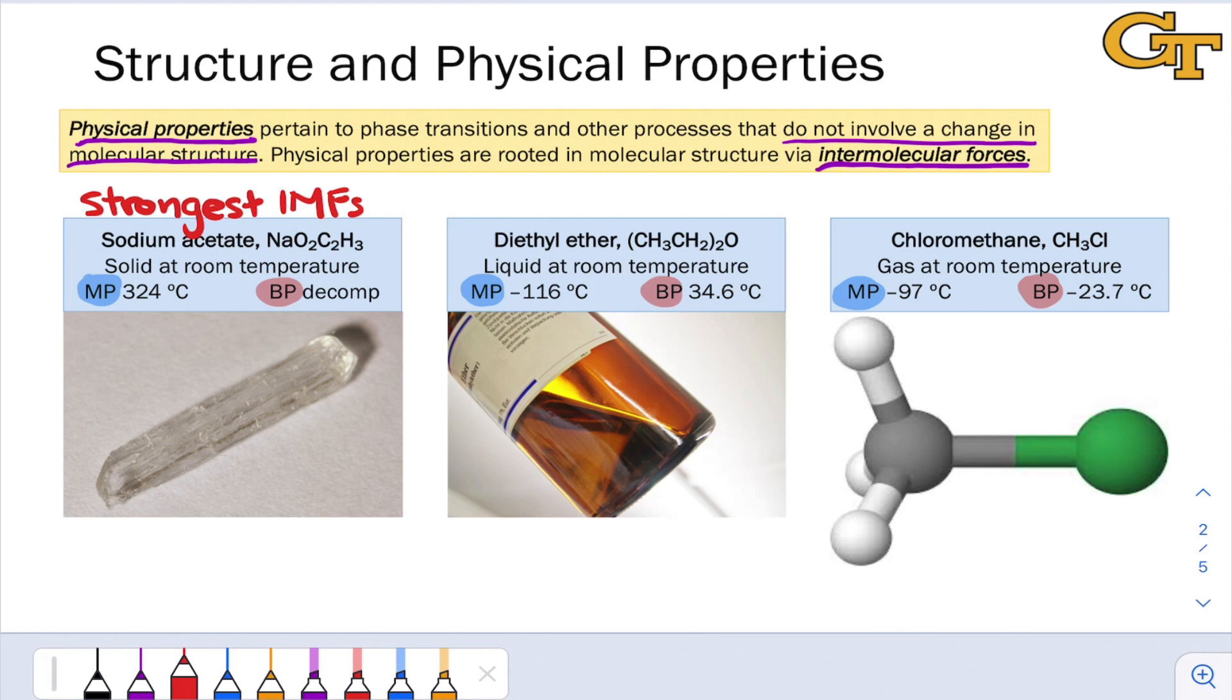On the other side of the coin, the lowest boiling substance, chloromethane, has the weakest intermolecular forces. It is a polar compound for sure, but it's a smaller molecule than diethyl ether. It has weaker dispersion forces as a result. And chlorine being a little bit less electronegative than oxygen, we might argue that the IMFs are going to be a little bit stronger in the more polarized diethyl ether.